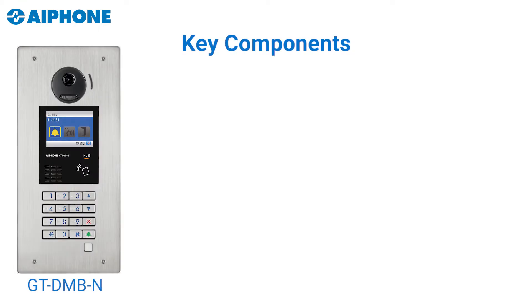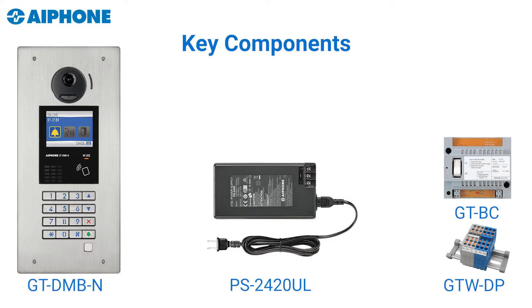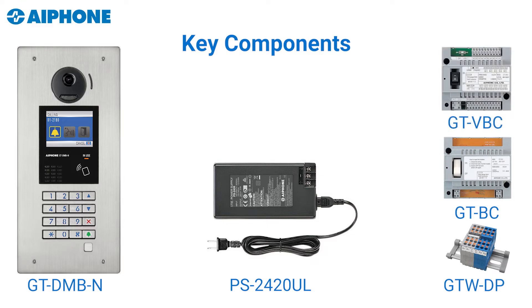First let's take a look at the parts needed for the installation. On the left hand side you'll see the GT DMBN entrance panel. In the center of the page is the PS2420UL, and in the right hand corner you'll see the GTWDP which can be used in lieu of wire nuts. Above that is the GTBC, the audio distribution or amplifier unit, and above that is the GTVBC, the video distribution or amplifier unit.